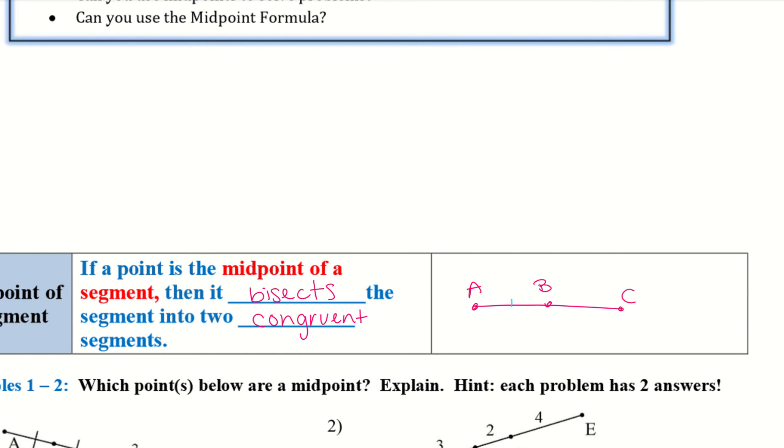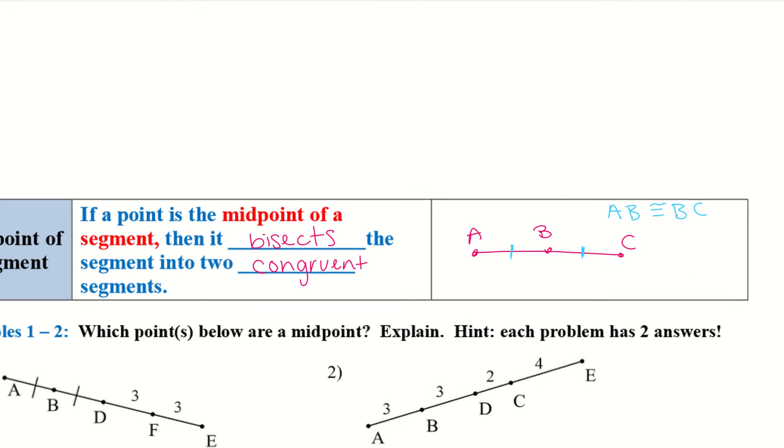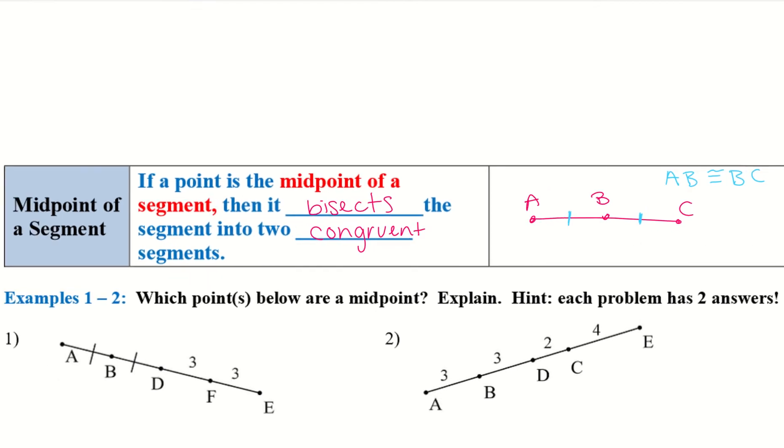That is going to tell me that AB is congruent to BC. So then once again we talked about this in 2.1, when you draw those lines that means they are equal to one another. So these are congruent segments now because B is a midpoint.